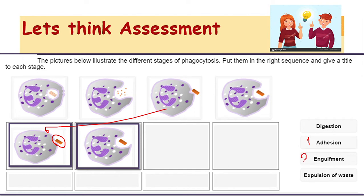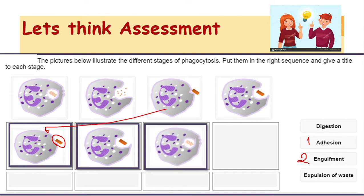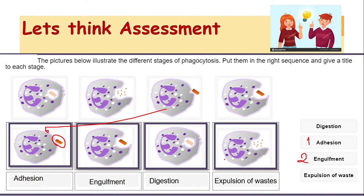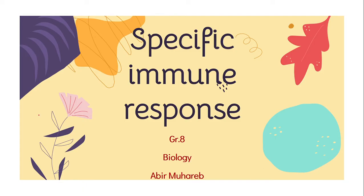Number three is digestion: the antigen, bacteria, or any kind of microbe will be digested inside the granulocyte. Number four is the expulsion of waste: the granulocyte expels the waste after digestion. Then we started our lesson, which was about specific immune response.